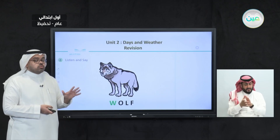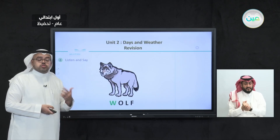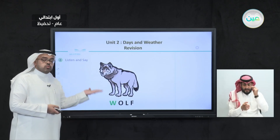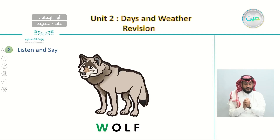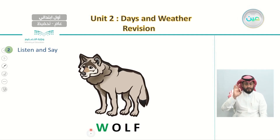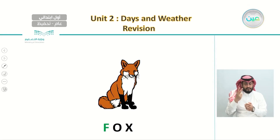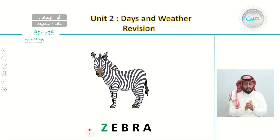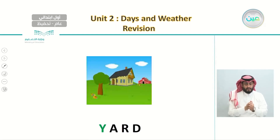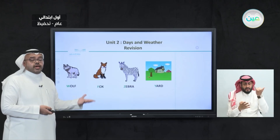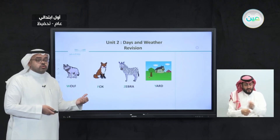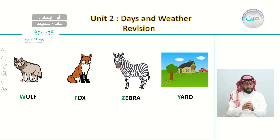In the Phonics lesson, we focused on four important letters: W, X, Y, and Z. It's important not only to make the sound of these letters but also to memorize words with them. The word for letter W is 'wolf,' for X is 'fox,' for Z is 'zebra,' and for Y is 'yard.' Let's say them: wolf, fox, zebra, yard.